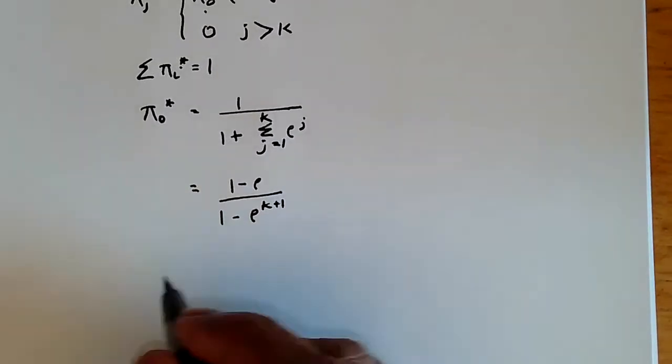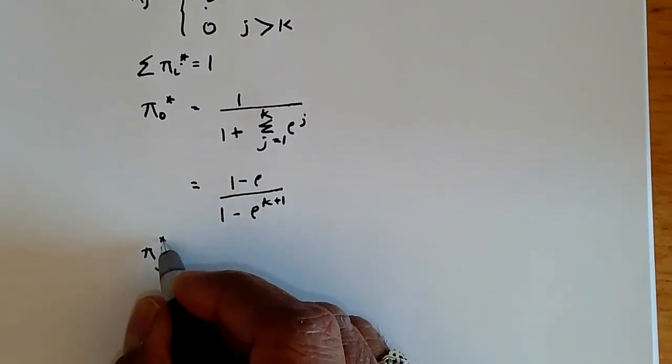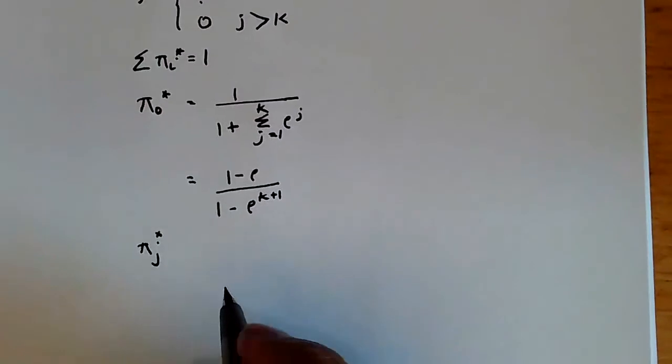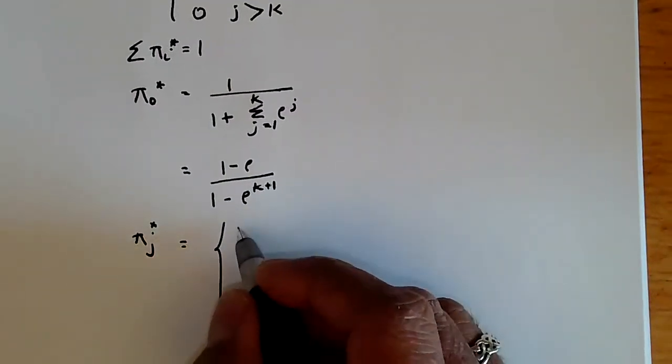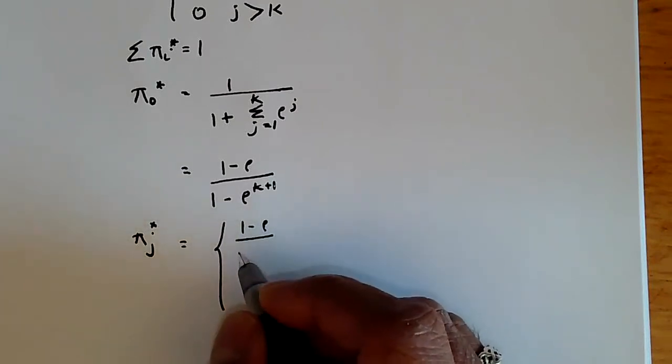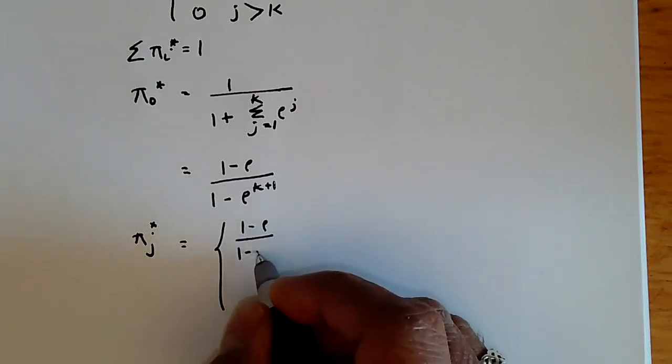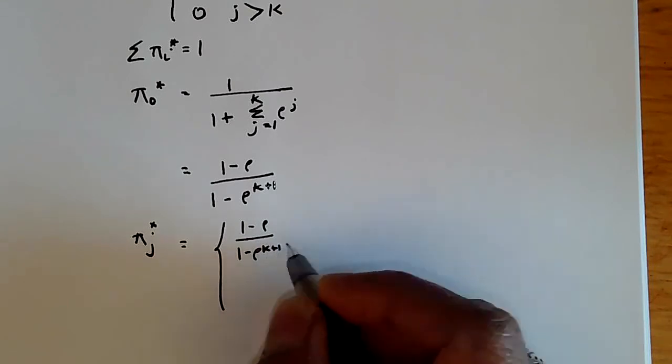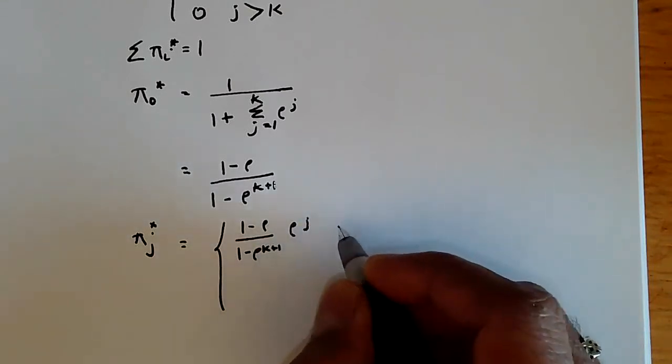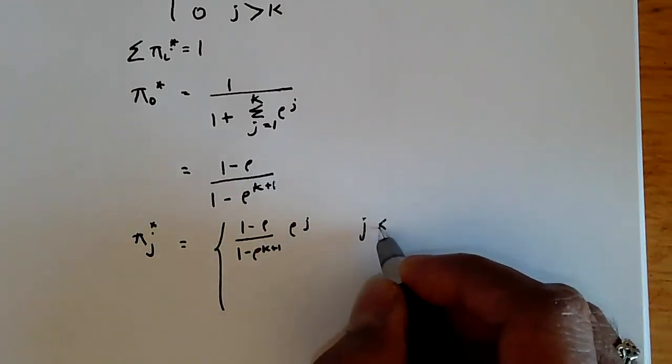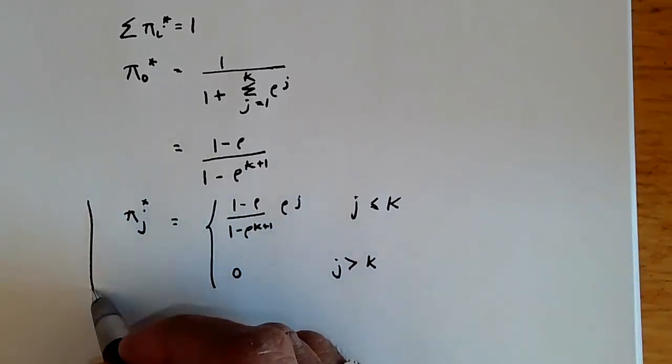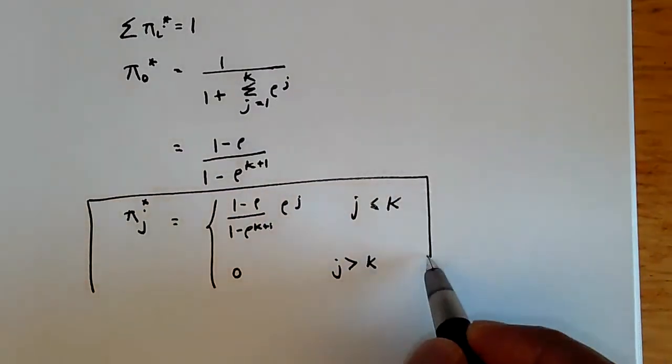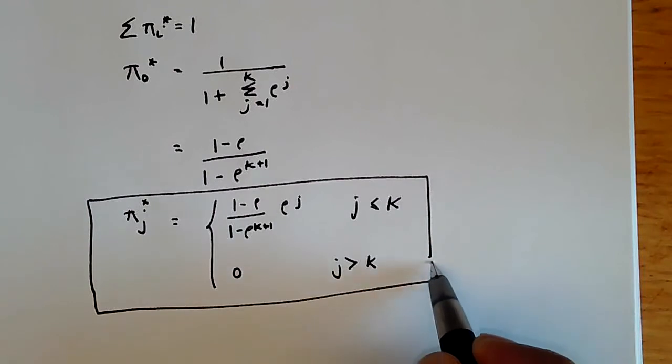And so pi j star, plugging this into the previous equation, is therefore going to be given by 1 minus rho over 1 minus rho to the k plus 1 times rho to the j, for j less than or equal to k, and 0 for j greater than k. And so this set of equations gives us the probability of being in each state of the chain.